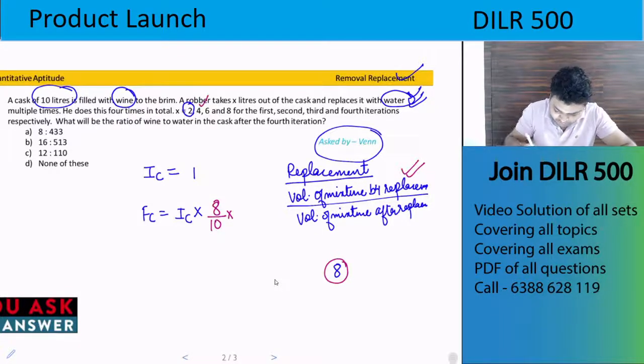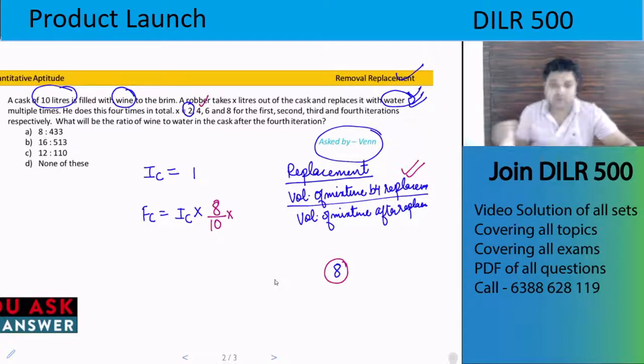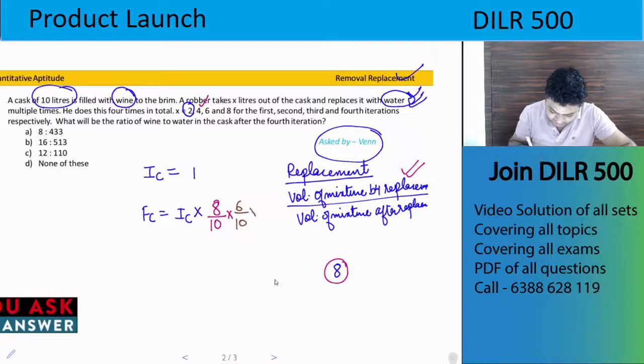So after the first replacement, the volume is 10. For the next case, when we remove 4 liters, the volume is 6. After replacement it's 10, so the multiplying factor is 6 divided by 10. Similarly, 8 divided by 10...